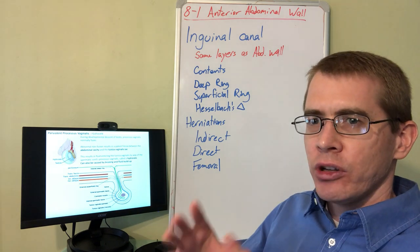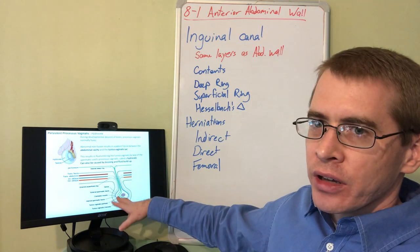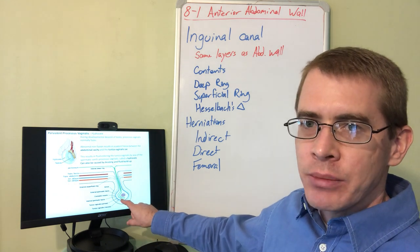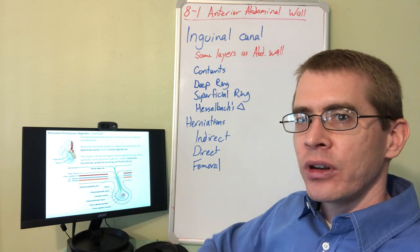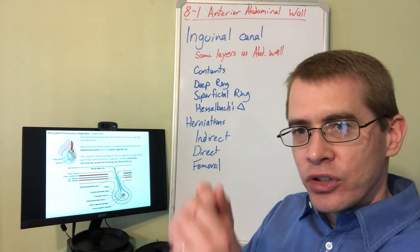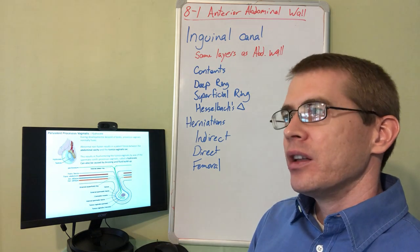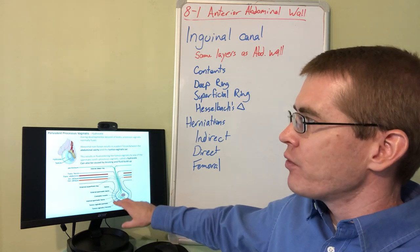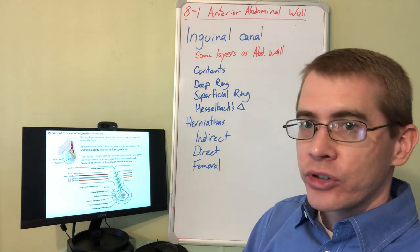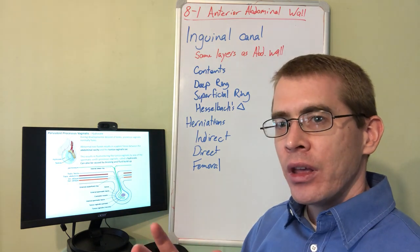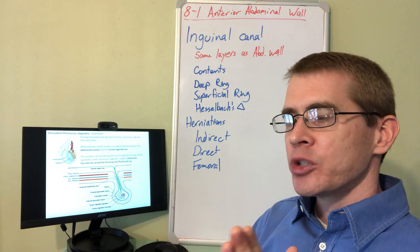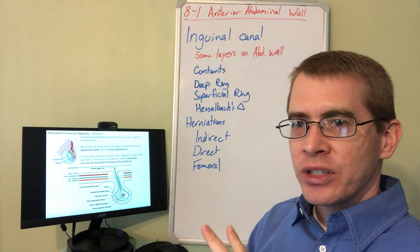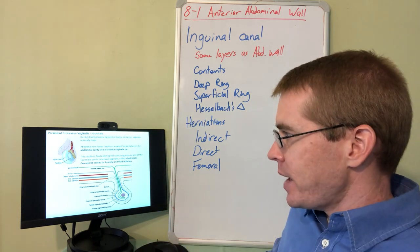Another common source of hydrocele, especially in athletes, is bruising within the scrotal region causing a buildup of fluid or edema that collects in the tunica vaginalis. This can be corrected using a needle to drain the fluid, or surgical procedures can remove the tunica vaginalis to correct the hydrocele. This is something you'll encounter, especially in sports medicine or orthopedic specializations.